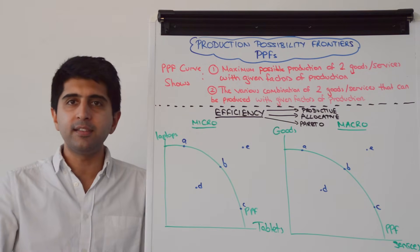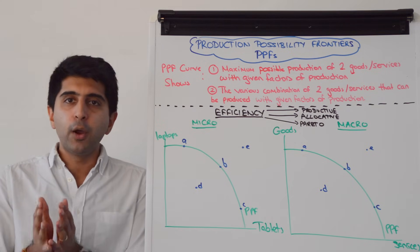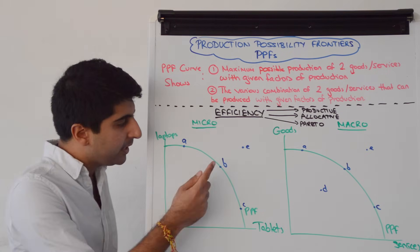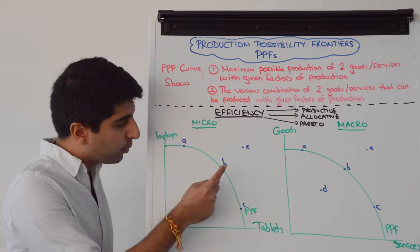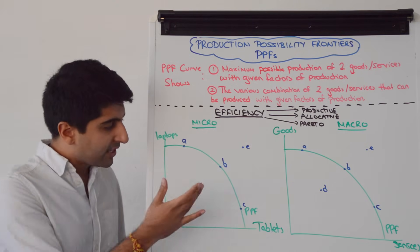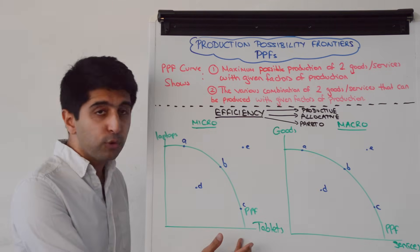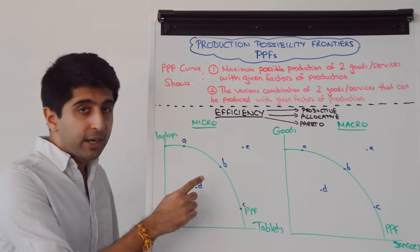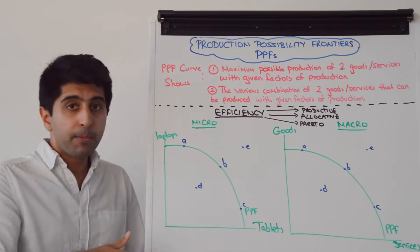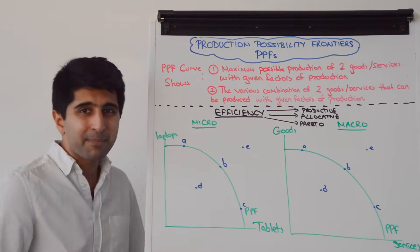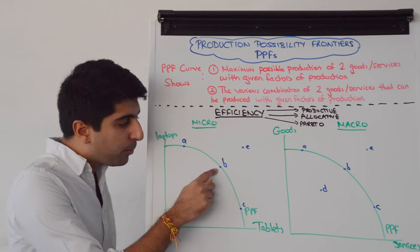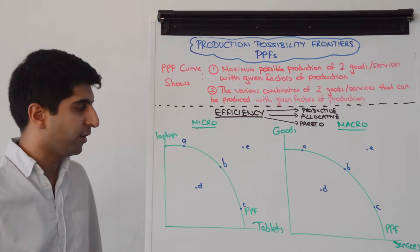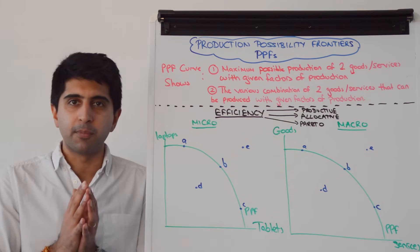What is Pareto efficiency? Pareto efficiency is the idea that nobody can be made better off without making somebody else worse off. Any point on the PPF is Pareto efficient. If we change point B to point C, we produce more tablets but give up laptops — people who like tablets are better off, but people who like laptops are worse off. Any movement away from a point on the curve makes someone worse off while making someone else better off.